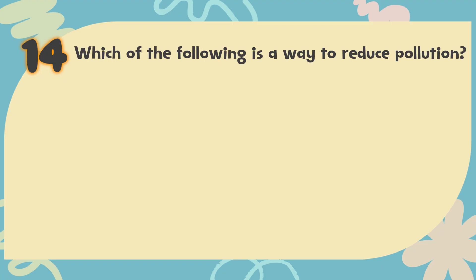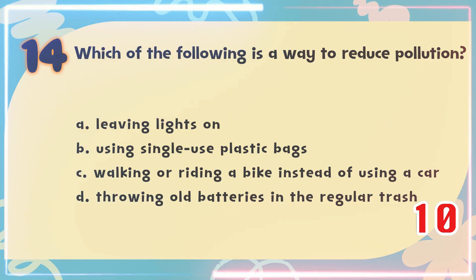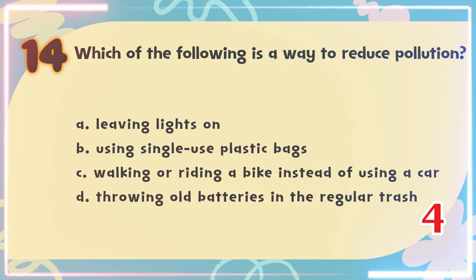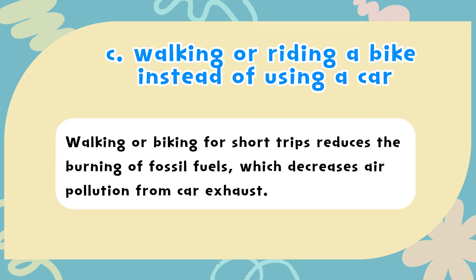Number 14. Which of the following is a way to reduce pollution? The choices are: A. Leaving lights on, B. Using single-use plastic bags, C. Walking or riding a bike instead of using a car, D. Throwing old batteries in the regular trash. The correct answer is C. Walking or riding a bike instead of using a car. Walking or biking for short trips reduces the burning of fossil fuels, which decreases air pollution from car exhaust.